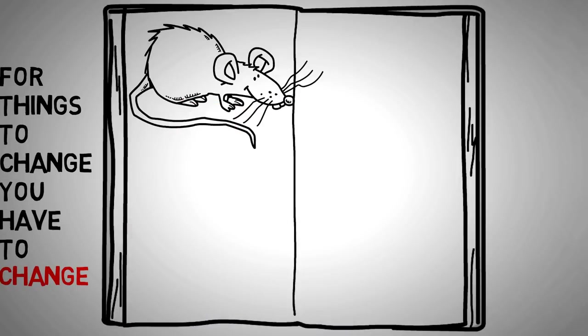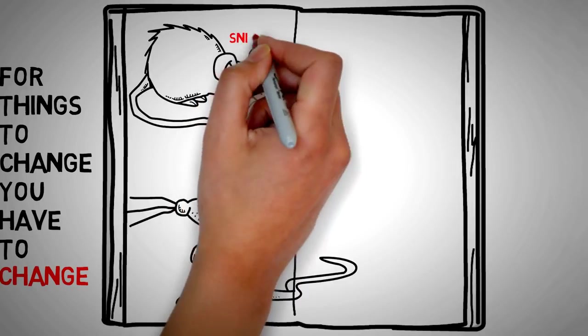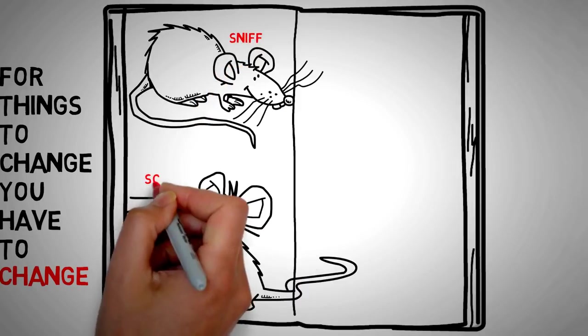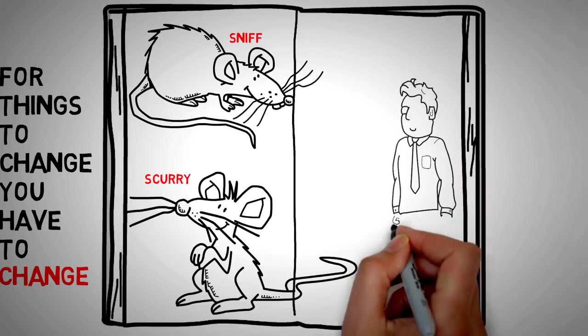Sniff constantly sniffs out the change and is ready for it. Scurry goes into action immediately without needing to know all the information. Then there's two little people, really smart people who've done well for themselves so far.